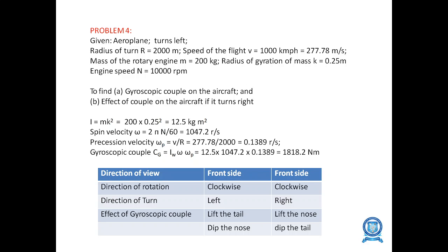A similar problem for an airplane turning left: find the gyroscopic couple for the aircraft when it turns right. Given velocity, radius, mass, K value, and speed — similarly find I = Mk², ω = 2πn/60, ωp = V/R, and C = I·ω·ωp. The direction of rotation is clockwise, turn is left — effect: lift the tail and dip the nose.